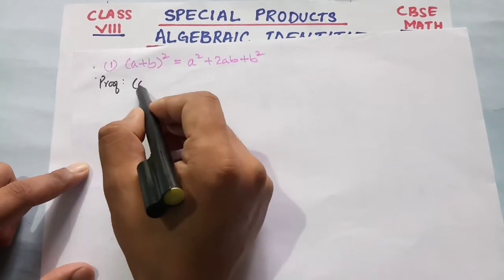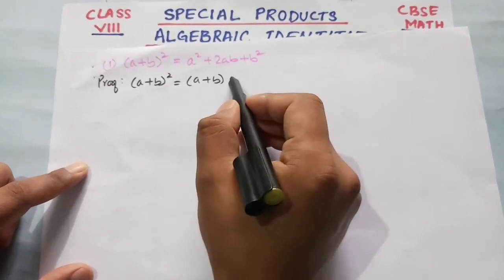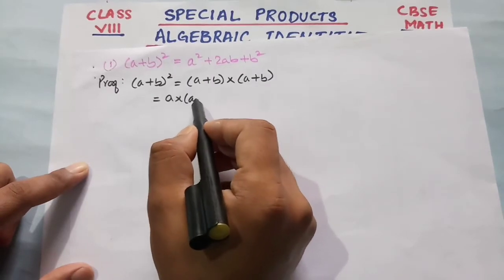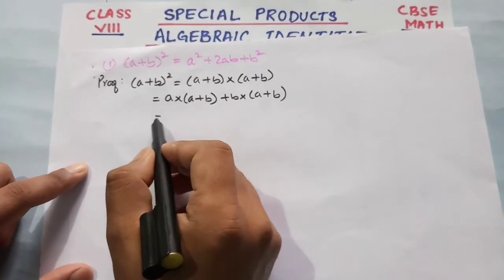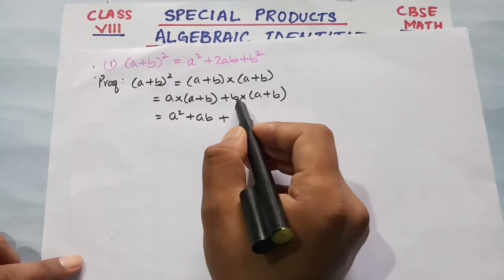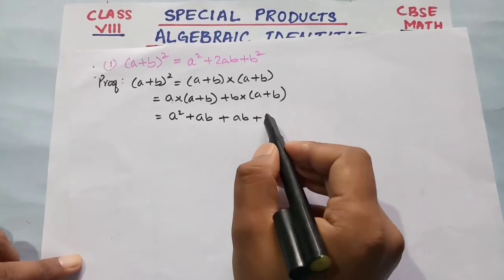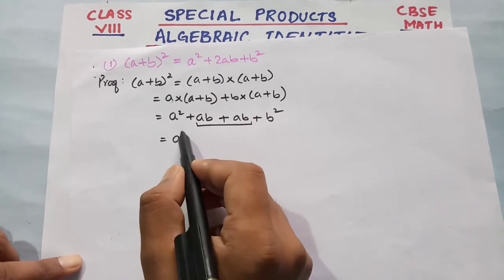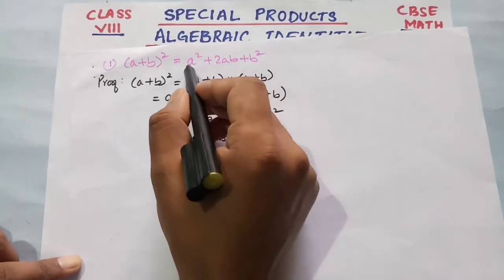To prove: (a + b) whole square = (a + b) into (a + b). Multiplying: a into (a + b) plus b into (a + b), which gives a squared plus ab plus ab plus b squared. Collecting like terms: ab plus ab is 2ab, so we get a squared plus 2ab plus b squared.